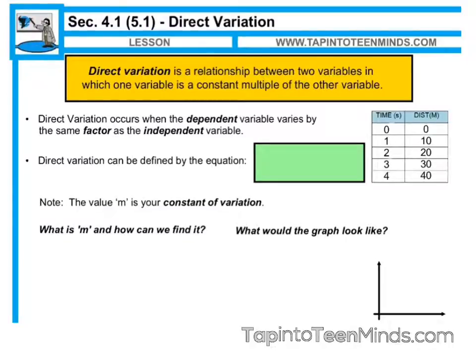A direct variation is a relationship between two variables in which one variable is a constant multiple of the other variable. Essentially what this means is that one thing directly affects the other.